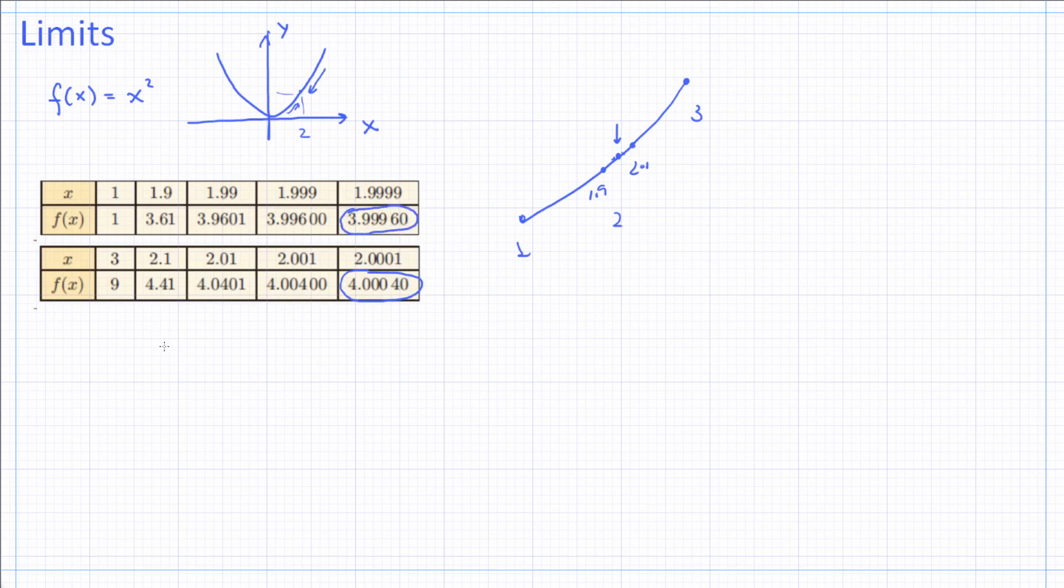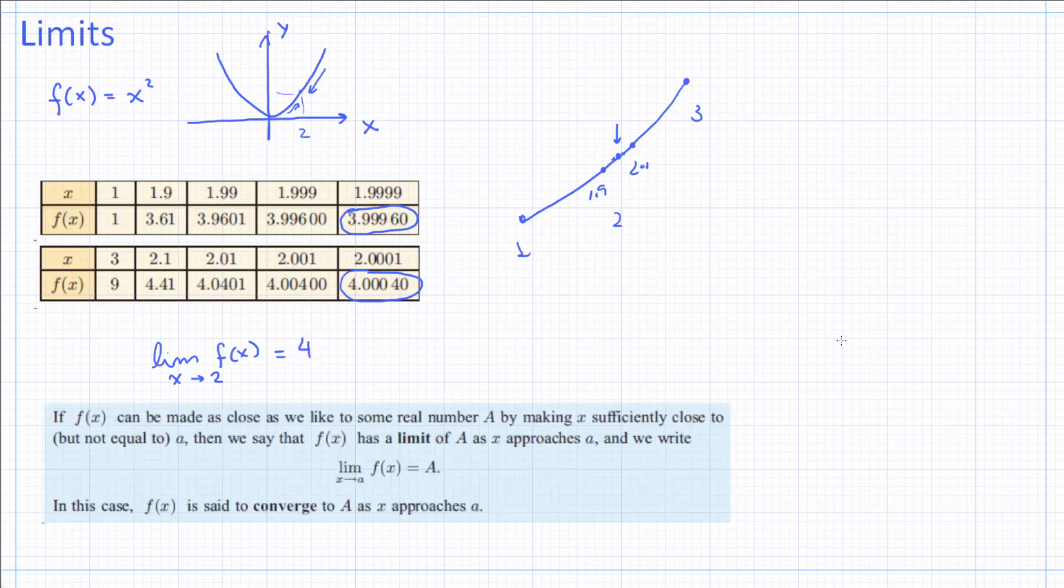So we can just say that the limit of this function, f(x), when x approaches 2, is 4. And then we could state this informal definition of the limit, which is: if f(x) can be made as close as we like to some real number A, in this case A was 4, by making x sufficiently close but not equal to A, so you can see here it's not exactly 4, but it's getting close to 4.